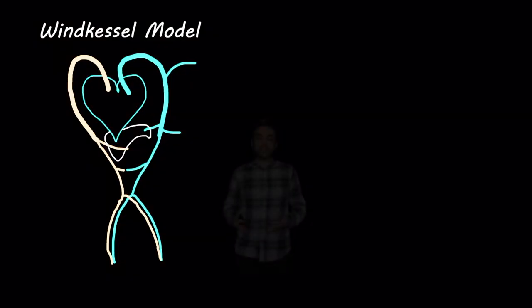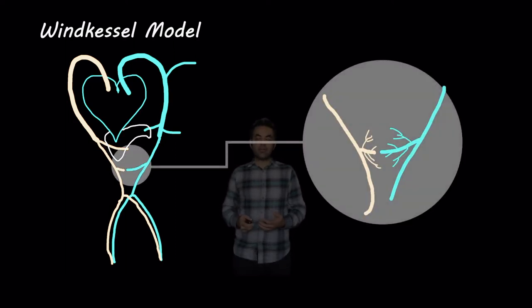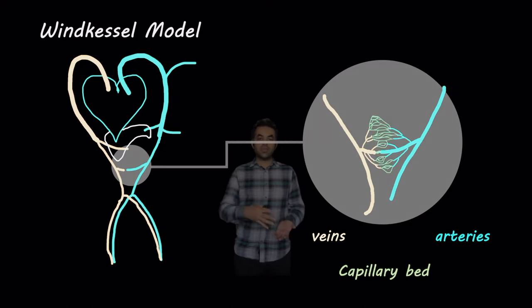Today we want to talk about Windkessel models, a way to simulate blood flow behavior inside our vessel network. We know that there are two main types of vessels in our cardiovascular system: arteries and veins. And there is another type of vessels that connect the arteries to the veins, and they are called capillary beds.